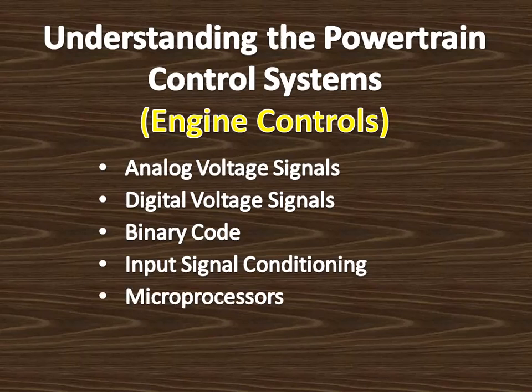The microprocessor is the calculating and decision-making chip in a computer. Millions of miniature transistors and diodes are contained in the microprocessor, and these transistors act as electronic switches that are either on or off. The components in the microprocessor are etched on an integrated circuit, or IC, that is small enough to fit on a fingertip. The silicon chip containing the IC is mounted in a flat rectangular protective box, with metal connecting pins extending from each side that connect the microprocessor to the circuit board in the computer.